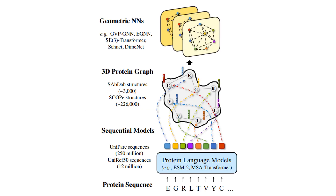Here's what they did. They feed amino acid sequences into a protein language model called ESM2 and extract the residue representations, and then these representations can be used as the input node features for the graph neural network. This is a convenient way to boost the initial node representation before feeding it into the 3D graph neural networks. And now let's take a look at some of their results and experiments.